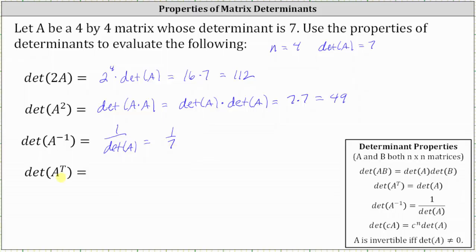Finally, we have the determinant of A transpose. The determinant of A transpose is equal to the determinant of A, which we are given is equal to seven.